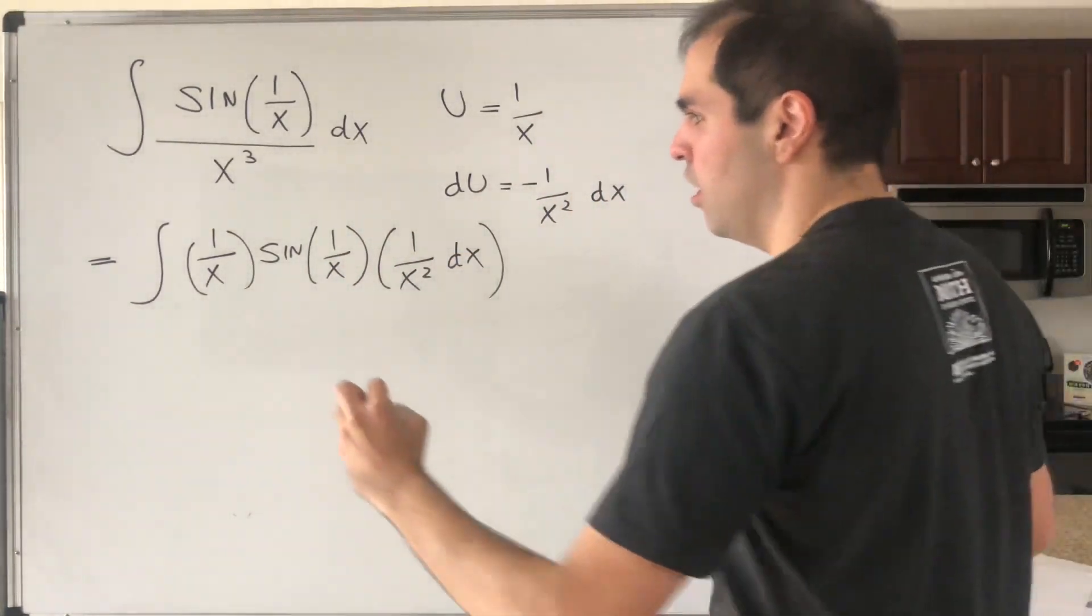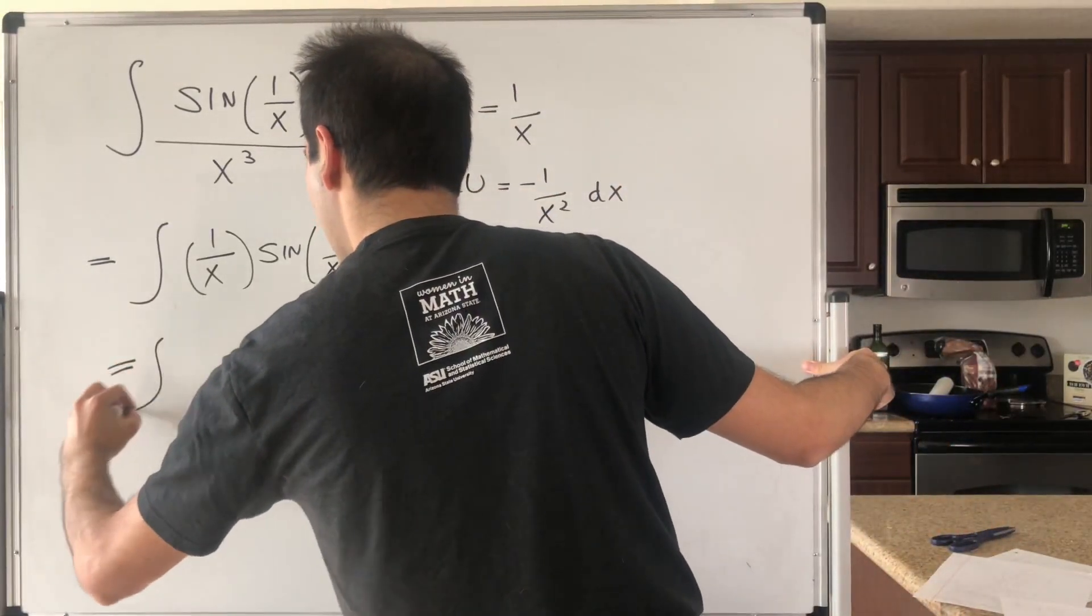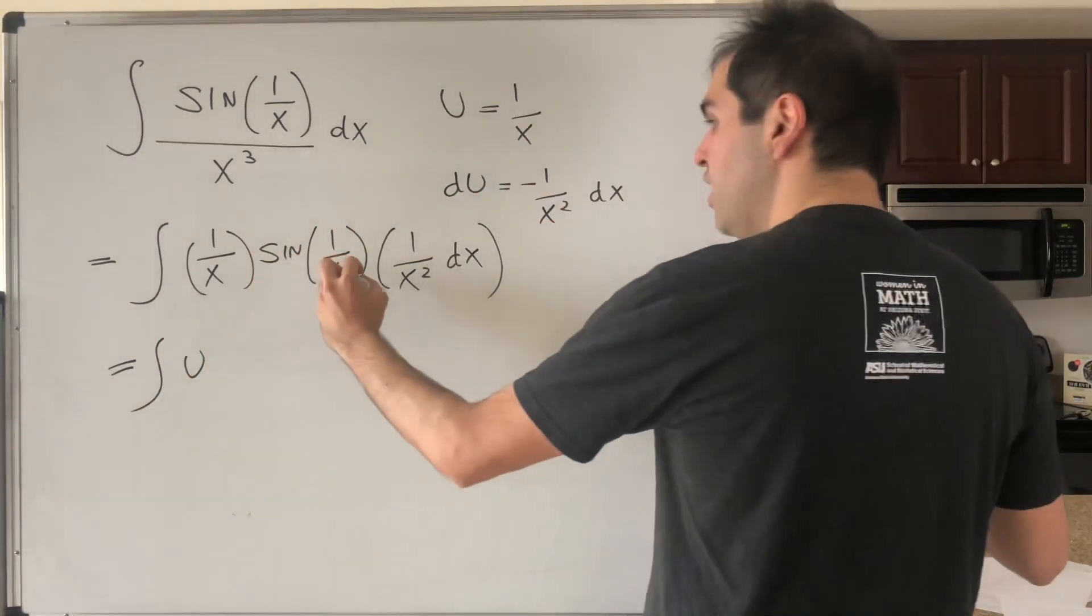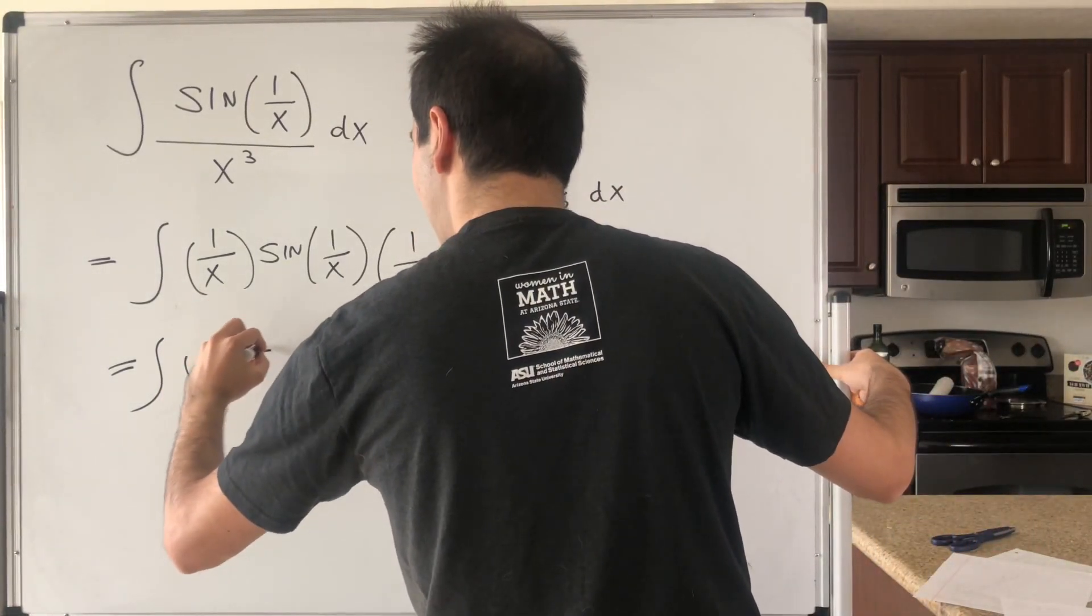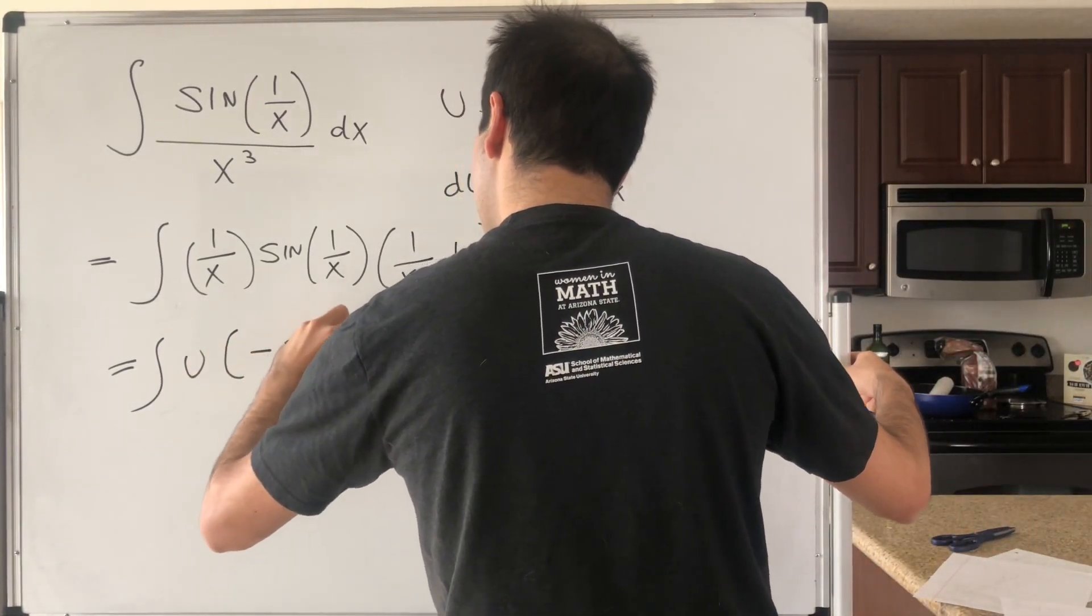which simply becomes the integral of u sine of u and then minus du, which you can write as minus u sine of u du.